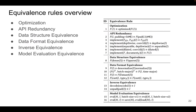This is an overview of all 16 equivalence rules we defined. We categorize them into six categories: optimization, API redundancy, data structure equivalence, data format equivalence, inverse equivalence, and model evaluation equivalence. Due to time limits, I will introduce two equivalence rules with examples from the optimization and data structure equivalence categories. For details of all 16 equivalence rules, please read our paper.